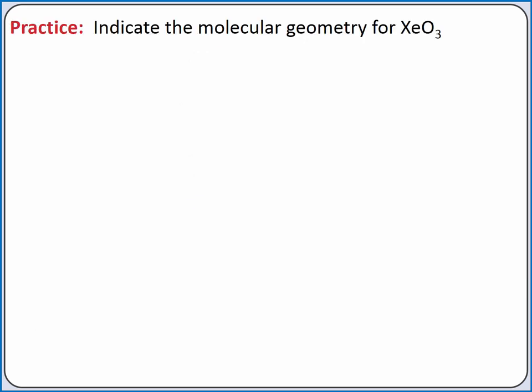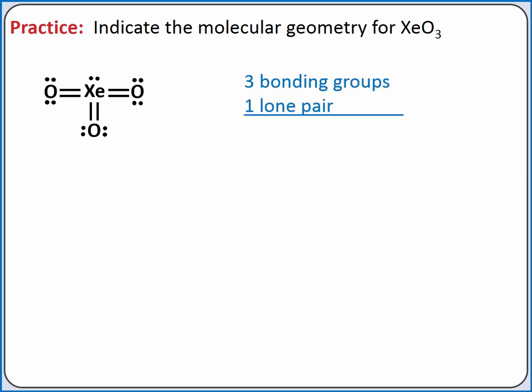Let's practice assigning molecular geometries starting with xenon trioxide. First, we'll draw the Lewis structure for xenon trioxide. We have three triple bonds and one lone pair on xenon in our best Lewis structure, which minimizes formal charges. From our Lewis structure, we see that xenon has three bonding groups and one lone pair of electrons. When determining the molecular geometry around a particular atom, we only count the lone pairs on the atom in question. When we have three bonding groups and one lone pair, our molecular geometry is called trigonal pyramidal.